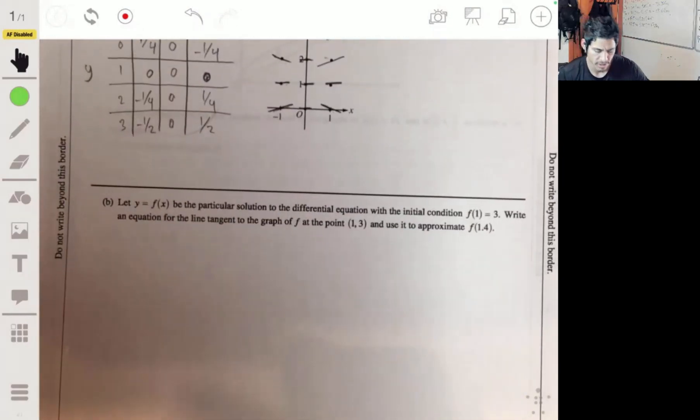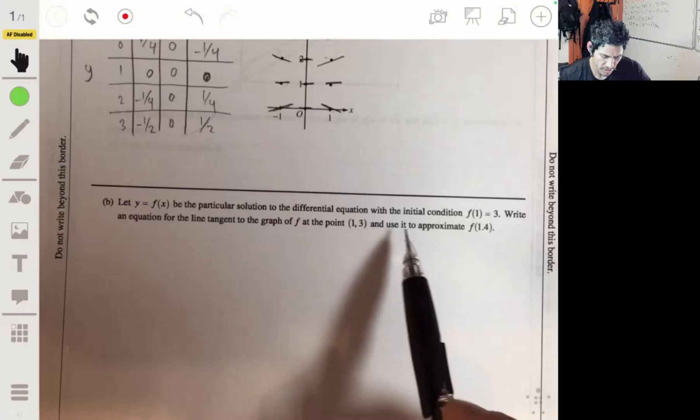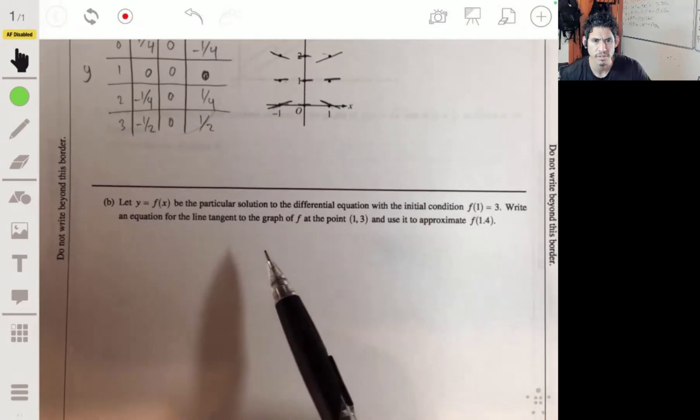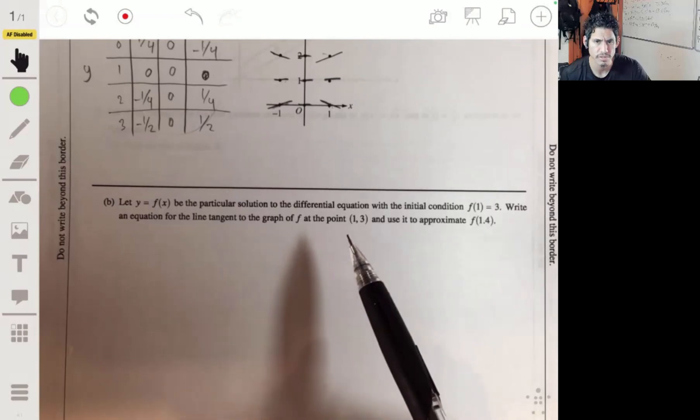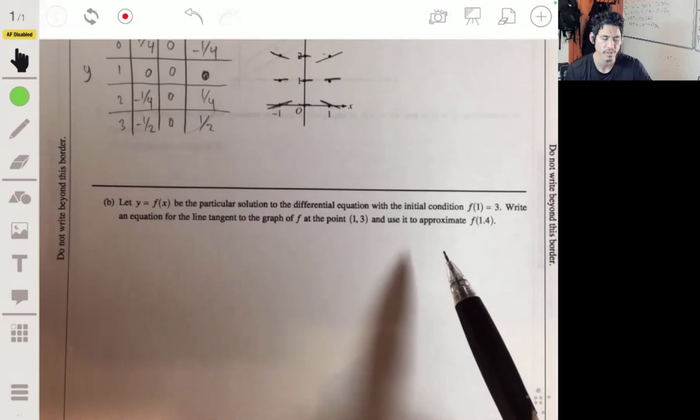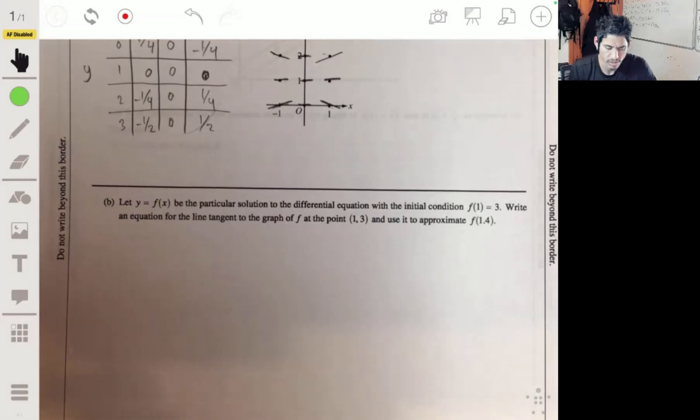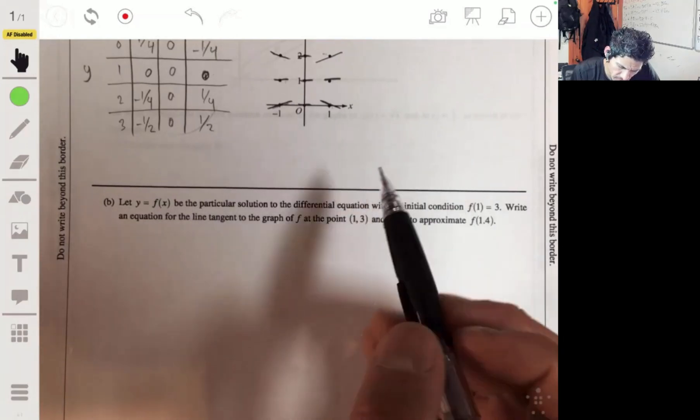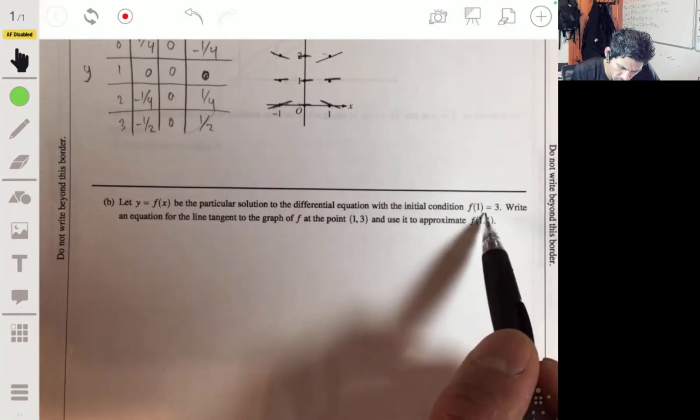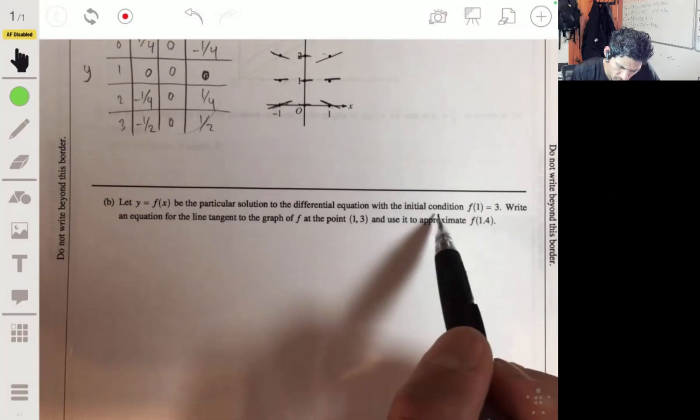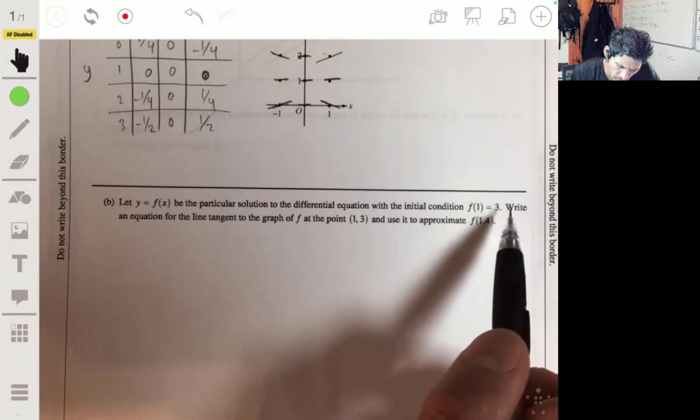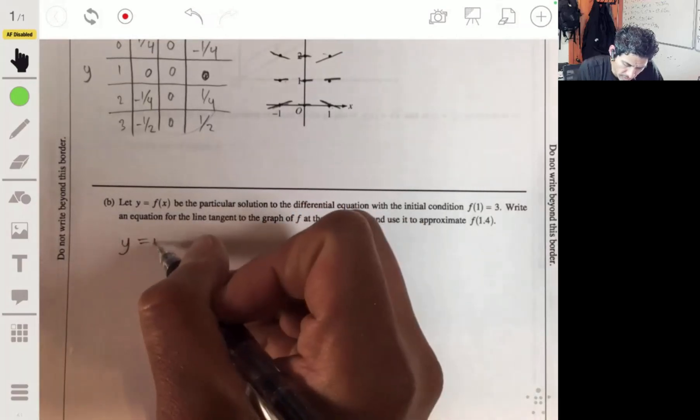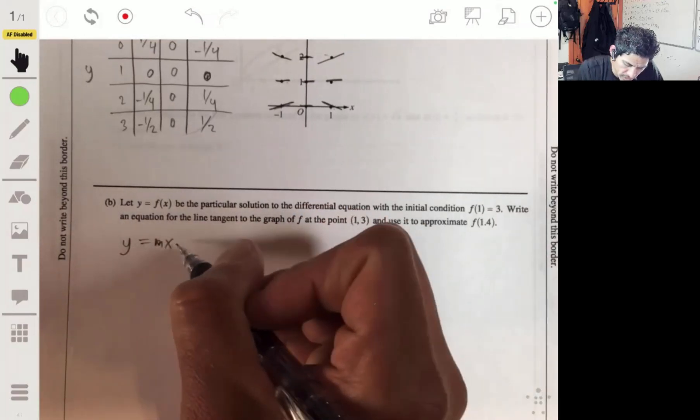So let f(x) be the particular solution to the differential equation with the initial condition f(1) equals 3. Write the equation for the line tangent to the graph of f at the point (1,3) and use it to approximate f(1.4). Not a problem. We can do that because we just use an equation for the line tangent.